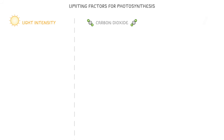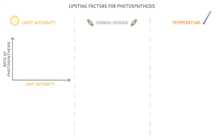When we talk about limiting factors for photosynthesis, we're normally referring to light, carbon dioxide, and temperature, and we put these on the x-axis when we use graphs. Here we have light intensity on the x-axis and rate of photosynthesis on the y-axis. As light intensity increases, so does the rate of photosynthesis, which makes sense because photosynthesis relies on energy from the sun.